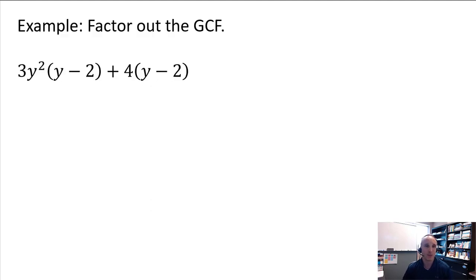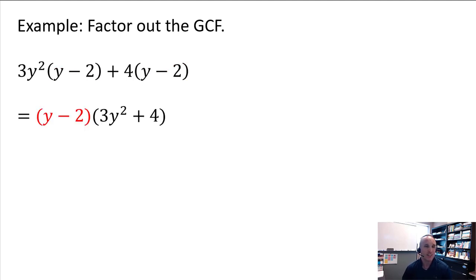Here's a simple example where we factor out the GCF. We can see that the first half of this polynomial has a y minus 2 factor, and the second half also has a y minus 2 factor. So we pull out that common GCF of y minus 2, leaving behind 3y squared plus 4. And now it's factored.